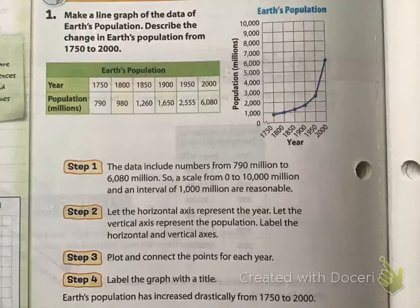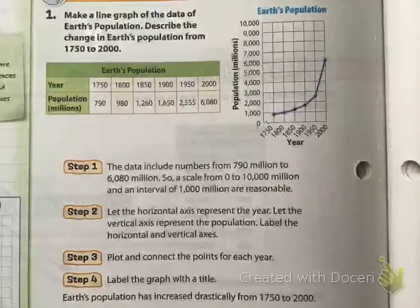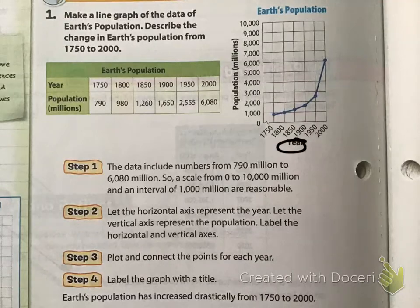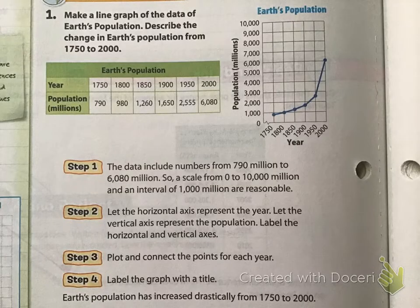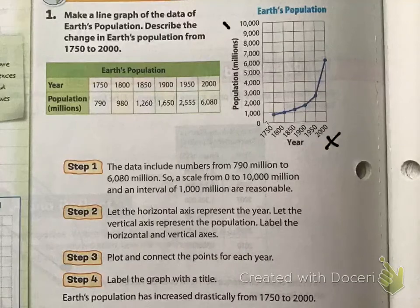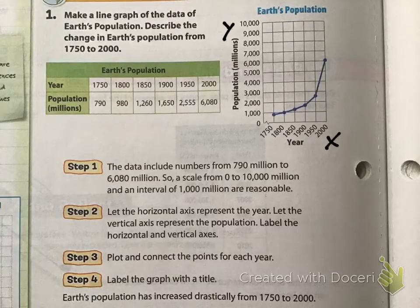Here are the steps: we make a line graph of the data of Earth's population, then describe the population change. We have our chart and we plug in. Year is the independent variable — it doesn't change based on results — but population depends on the year, so it's our dependent variable. Independent is x and dependent is y.